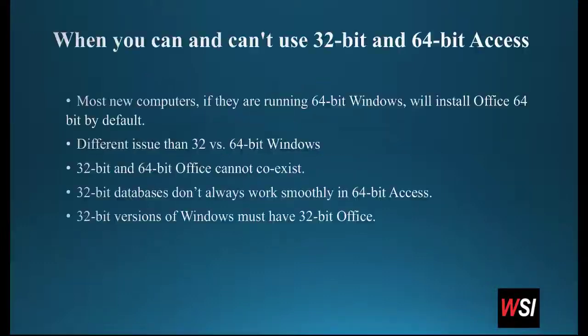Most new computers, if they're running 64-bit Windows — and pretty much all of them are — and you're trying to install Microsoft Office, particularly if you're using Office 365, 64-bit Office will be the default version that gets installed. You can change this, and that's something we sometimes recommend — installing the 32-bit version instead — but you have to tweak the setup program a little bit to make some choices. If you just let the setup program run and you're running 64-bit Windows, 64-bit Office will automatically be installed, so you have to pay attention to that.